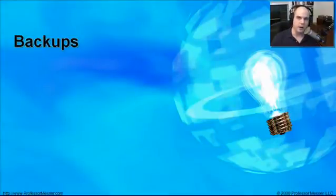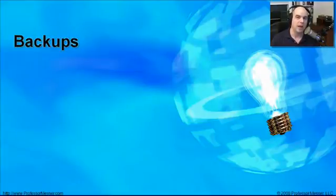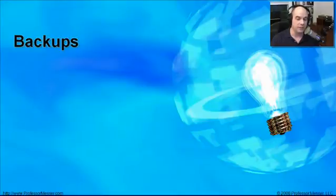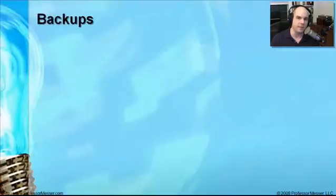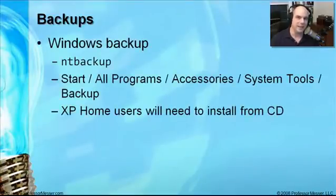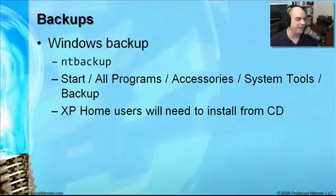Throughout the certification program I talk a lot about needing to have backups. Whenever you perform any major update, before you integrate a new service pack, have a backup available. You don't ever want to be in a situation where you've lost data, pictures, videos, or your operating system is no longer functioning. Fortunately, Windows includes a backup system in the operating system. Windows Backup can be started by typing NT Backup from the Run command, or you can find it under Start, All Programs, Accessories, System Tools, and Backup.